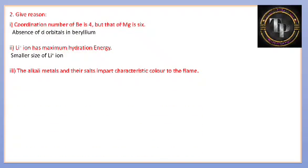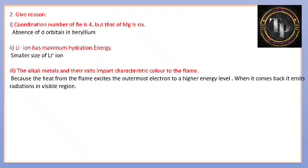The alkali metals and their salts impart characteristic color to the flame because the heat from the flame excites the outermost electron to a higher energy level. When it comes back to ground state, it emits radiation in the visible region, giving a characteristic color to the flame. Depending on the energy emitted, different alkali metals produce different colors.